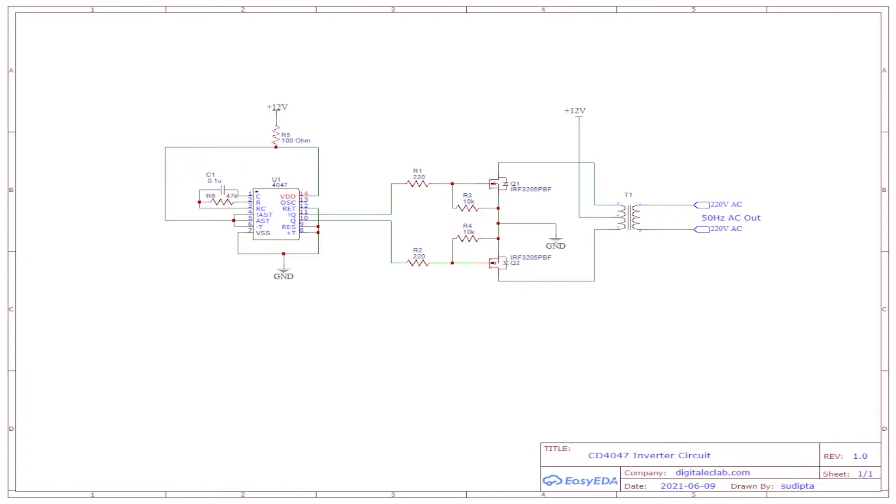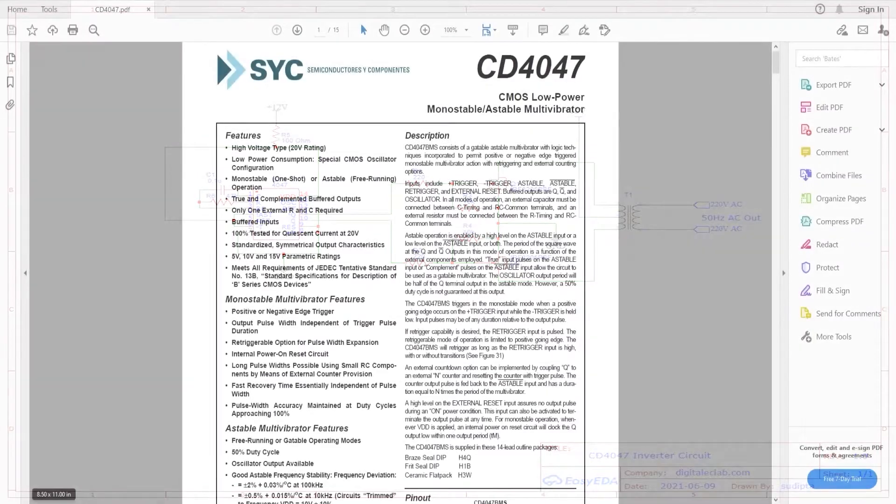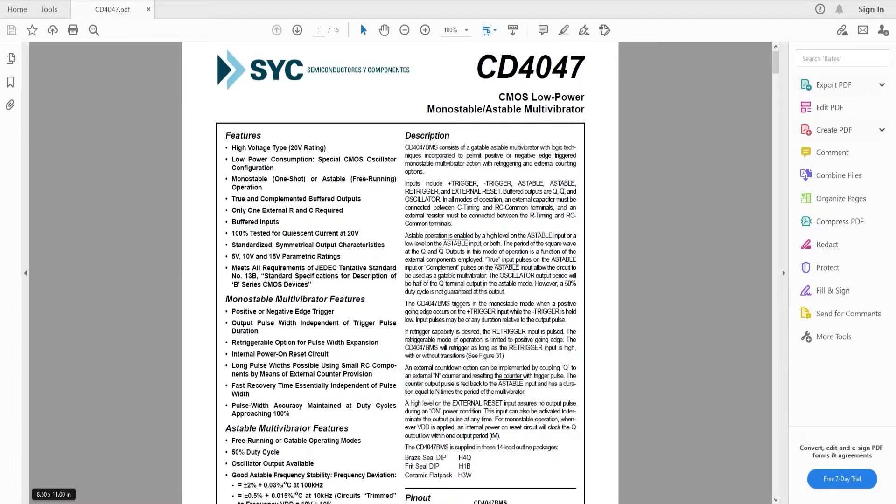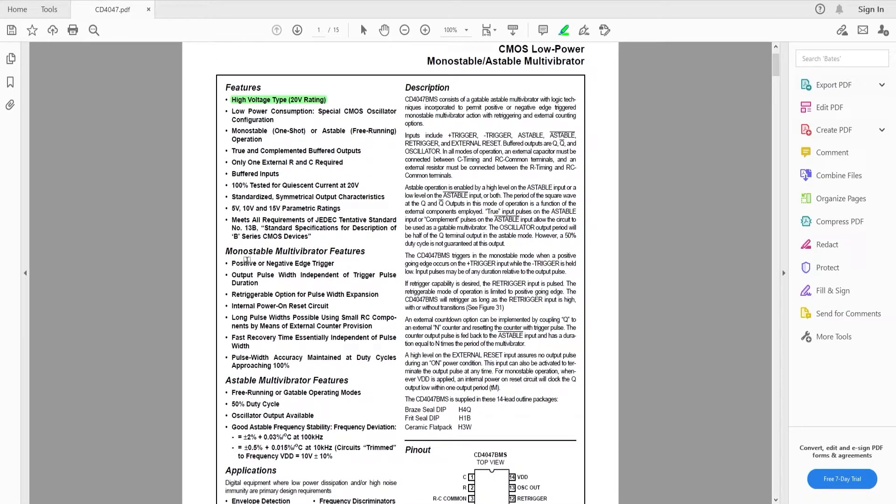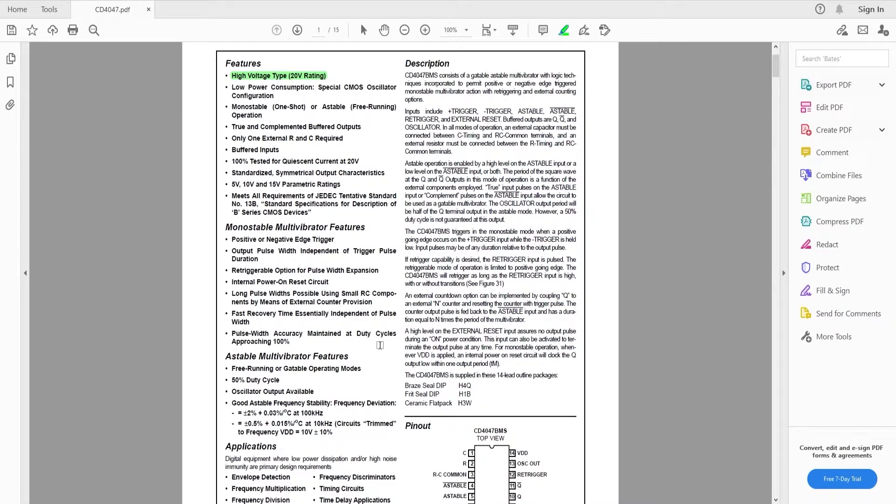If we just take a closer look at the data sheet of the CD4047, obviously you can see this chip can handle up to 20 volts DC so it is only good for 12 volt batteries and not for the 24 volt batteries, so be careful when you are designing the circuit. The duty cycle could be adjusted using the monostable multivibrator features or a 50 percent constant duty cycle could be obtained using the astable multivibrator features.